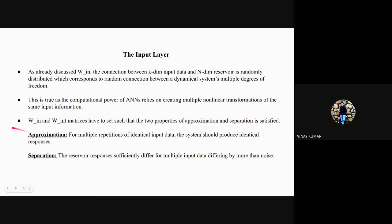These are two properties that need to be satisfied. For multiple repetitions of identical inputs the system should produce identical responses. Second is separation: the reservoir responses sufficiently differ for multiple inputs differing by more than noise. This basically avoids the noise created in the system.